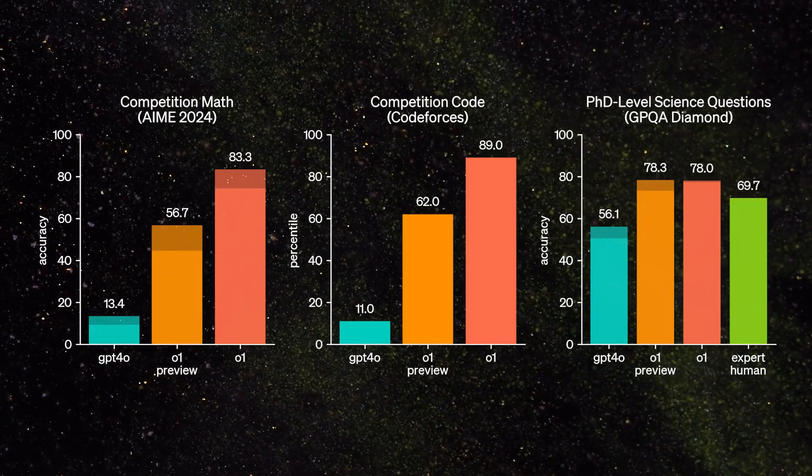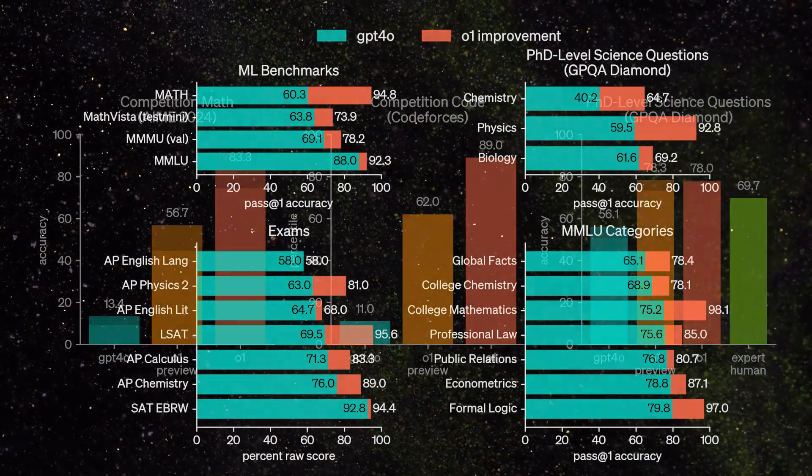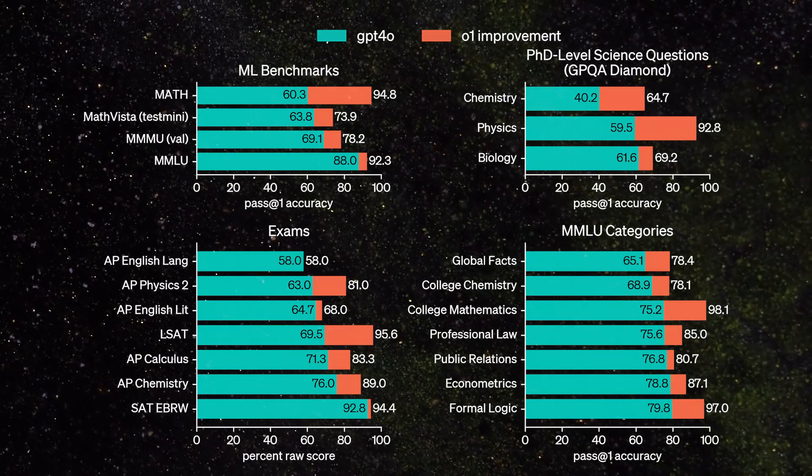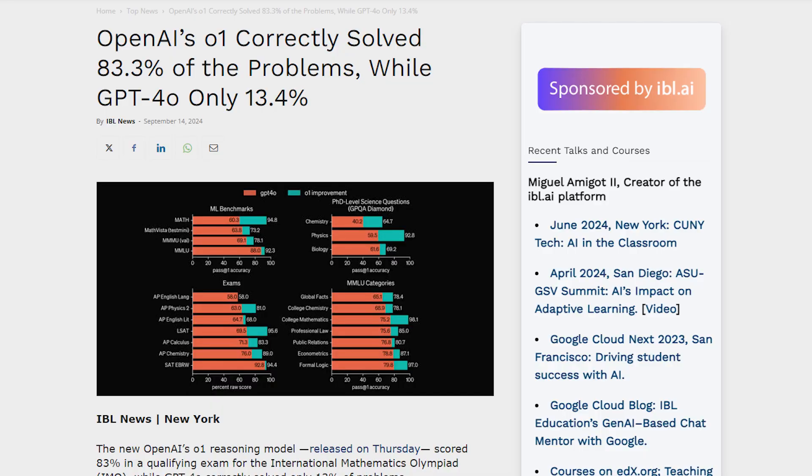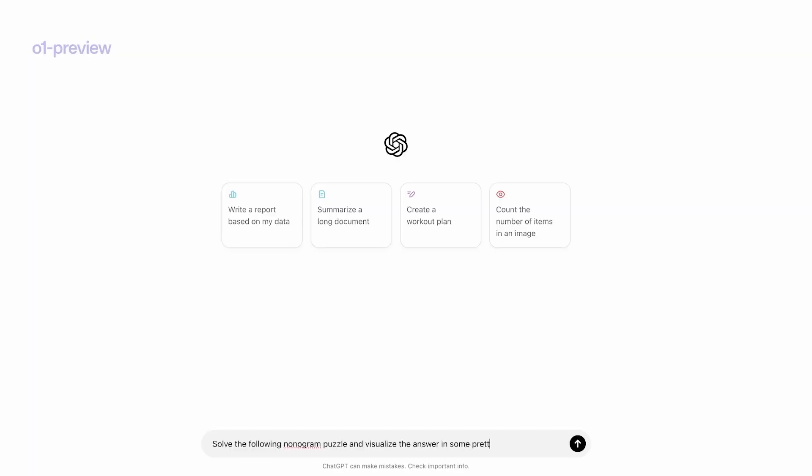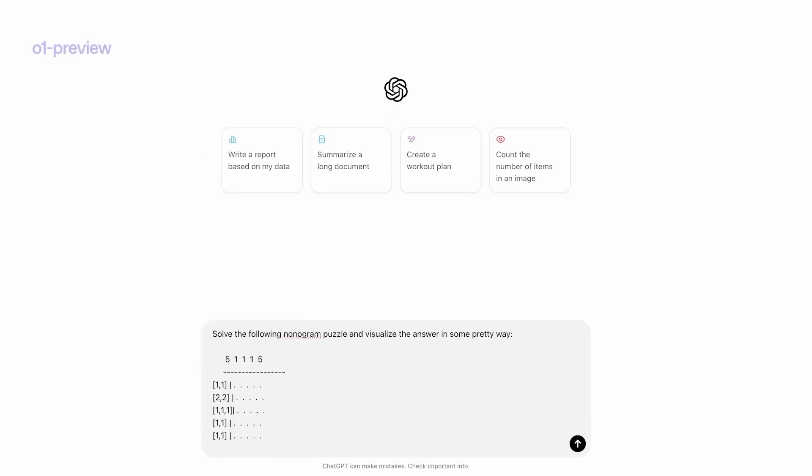GPT-04, as good as it is, only managed to score 13% on a qualifying exam for the International Math Olympiad. GPT-01? A whopping 83%. That's not just a slight improvement. That's a massive leap in capabilities.